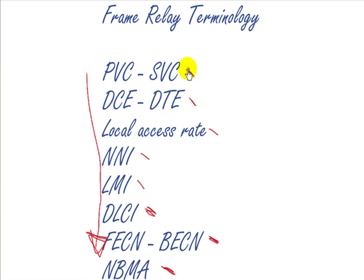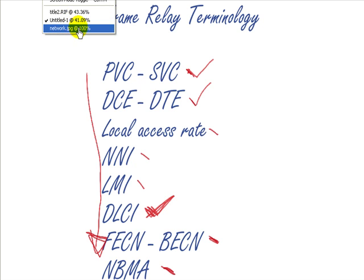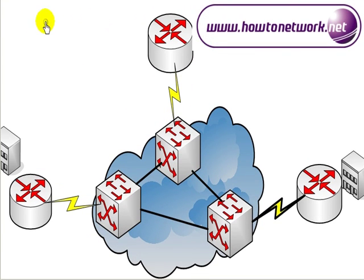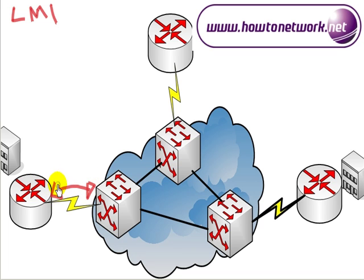So far we've talked about PVC, SVC, DCE, DTE, and DALC. Now I want to talk about keep-alives, which are in the form of LMI. LMI stands for local management interface and is best defined as the signaling standard used between the router and the frame relay switch. Although we have the DALC — which is the mapping between your router and the frame relay switch — the LMI is the keep-alive.